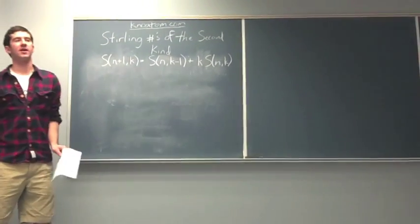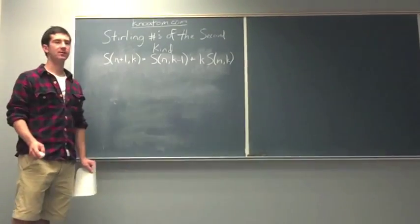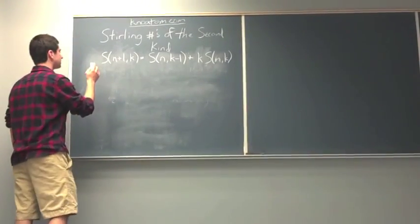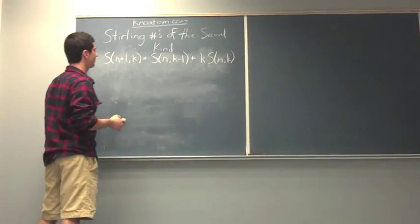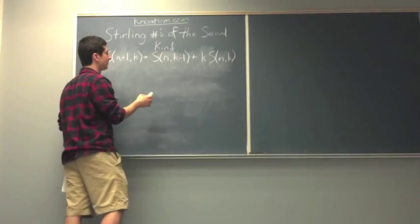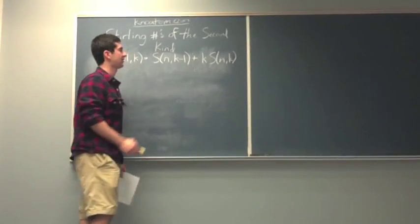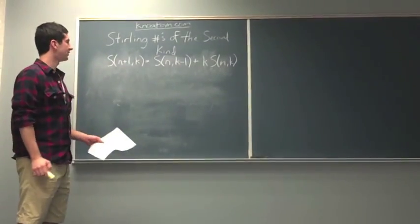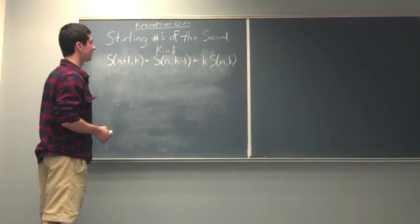Okay, the Stirling numbers at the same time also observe a recurrence relation. This can be modeled right here. The Stirling numbers of N plus 1, k is the Stirling number of N, k minus 1 plus k times the Stirling numbers of N, k. This is not too intuitive. But, when you get through the logic, it makes sense.